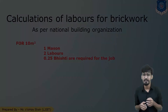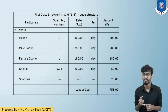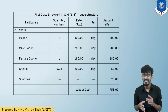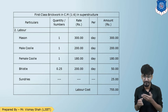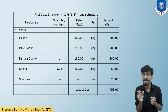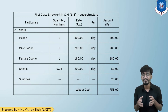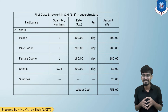In the labor cost table: 1 mason, 2 labors (1 male and 1 female), and 0.25 Bhisti. The 0.25 means one-fourth of a day of the Bhisti's attendance is occupied in partition brickwork — it does not mean one-fourth of a person. The total labor charges come to Rs. 755.